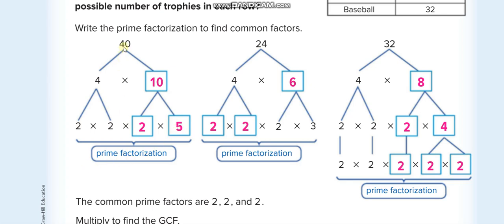Similarly for 24: 4 times 6 equals 24, then break 4 into 2 times 2 and 6 into 2 times 3 — we cannot break these further, so that's the prime factorization of 24. For 32: 4 times 8, then we write them down and break 4 into 2 times 2.